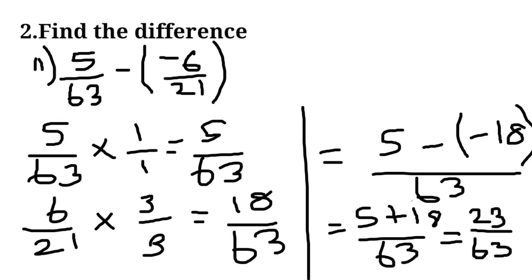Second sum: minus 5 by 63 minus of minus 6 by 21. Here LCM is 63 and we do the sum and we get the answer 23 by 63.